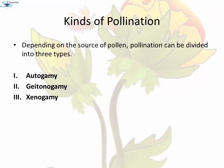Different kinds of pollination. Depending on the source of pollen, pollination can be divided into three types: Autogamy, Geitonogamy, and Xenogamy.